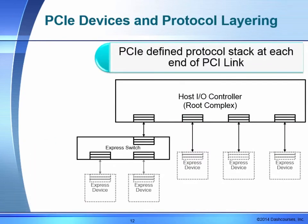Looking at PCI Express devices and protocol layering: each host PCI-to-PCI bridge — in effect every port — contains the three-layer stack. At the root complex, every port contains the transaction layer, data link layer, and physical layer to transfer information from the host IO controller to the devices in the PCI Express fabric. Within the switch, the upstream port — the port closest to the root complex — has the three-layer stack. The downstream ports are further away and connected to express devices, which contain the same three-layer stack. Those express devices use type zero headers, while the switch uses type one headers.